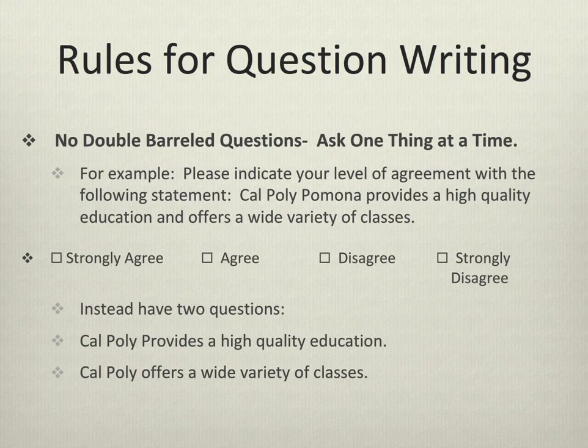The next rule is no double-barreled questions. You want to ask one thing at a time. For example, if I asked you to indicate your level of agreement with the statement 'Cal Poly Pomona provides a high-quality education and offers a wide variety of classes,' this is difficult because what if you believe they offer a high quality of education but not a wide variety of classes? It's impossible to answer because it's actually two questions. It should be asked as two separate statements. So again, that rule is no double-barreled questions — ask one thing at a time.